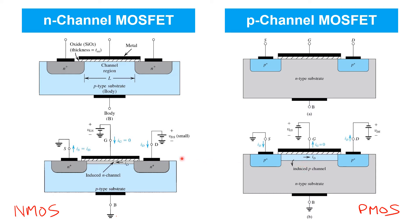In the n-channel transistor, the convention was to define the drain as the terminal at the higher voltage, because the source of a MOSFET is the source of the majority charge carriers flowing in the channel region. So with a positive voltage on the drain, we would expect positive current flow in the direction indicated. Since that current is carried by the majority carriers, electrons enter at the source and exit the drain. So a net flow of electrons from source to drain means a positive current flow from drain to source in an n-channel transistor.